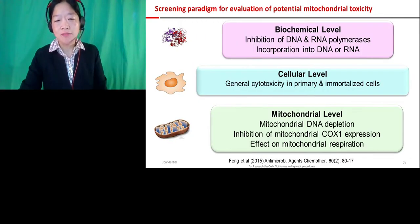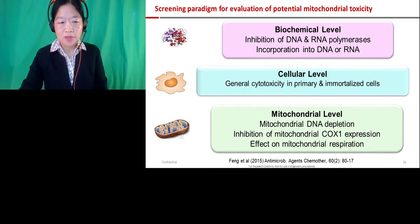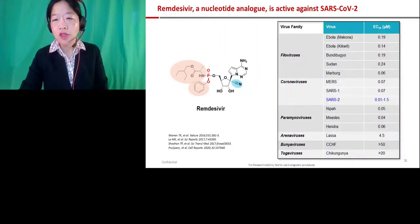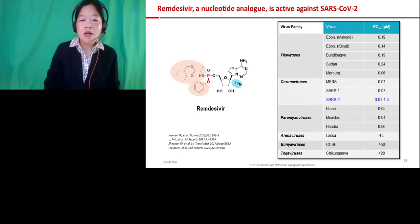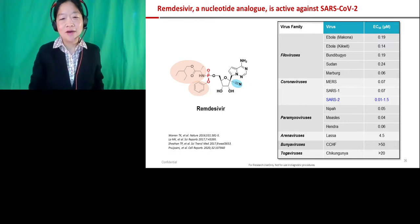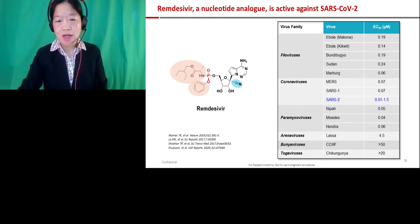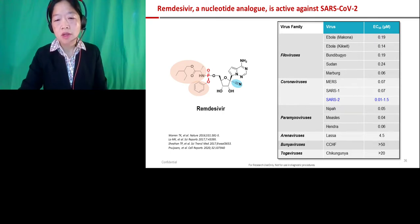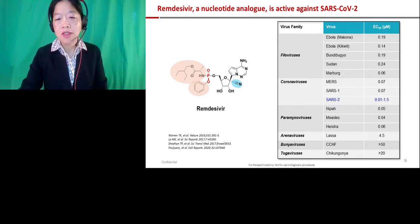Now I'd like to share what we found when we applied this same screening paradigm to Remdesivir. Remdesivir is a nucleoside analogue that has been known for a long time to be active against many viruses. As shown on the slide, we know it is active against Ebola, Marburg, MERS, and SARS — well before COVID-19. However, it was hard to conduct clinical trials against MERS or SARS because those outbreaks came and went.